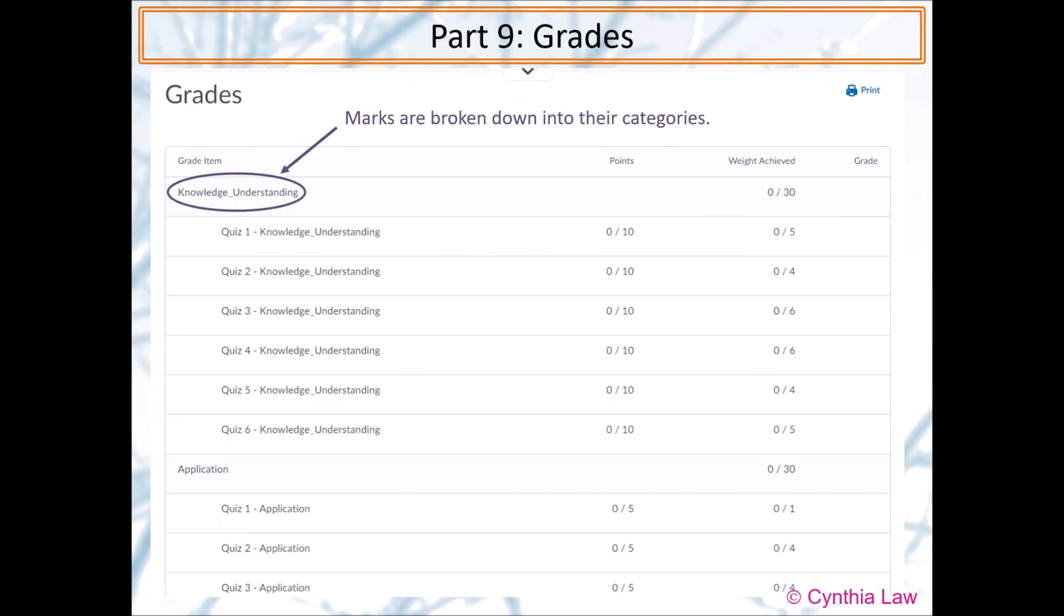Great! Marks are broken down into the categories. In this example, the percentage of knowledge and understanding as the final mark is 30%. The column at the left-hand side tells you what a quiz is out of. This one is out of 10.